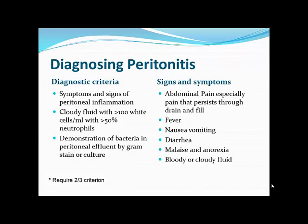An exit site infection without tunnel infection may be treatable with oral antibiotics. Exit site infection associated with tunnel infection or peritonitis requires IV antibiotics. If there is communication between the exit site and tunnel, the catheter probably needs to be removed. Peritonitis diagnosis requires two of three criteria: signs and symptoms of peritoneal inflammation — persistent abdominal pain throughout the cycle, cloudy fluid, fever, or nausea/vomiting/anorexia/diarrhea.